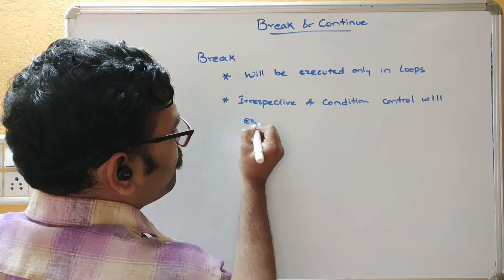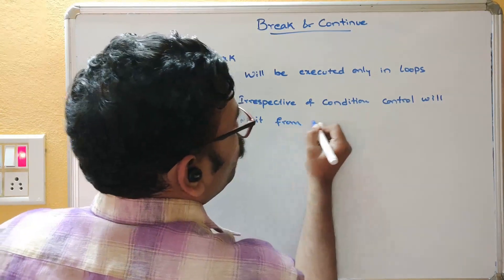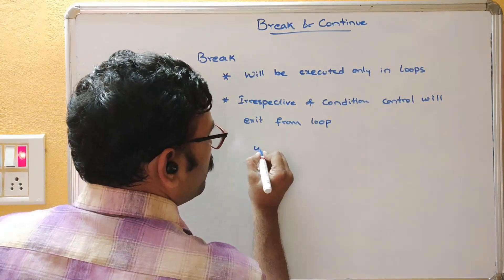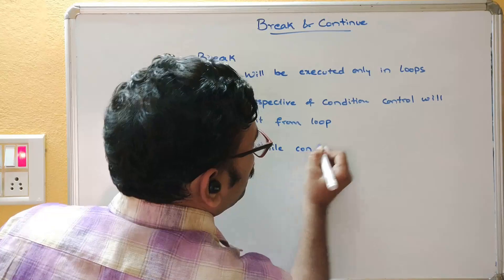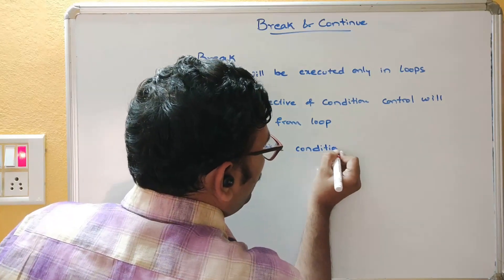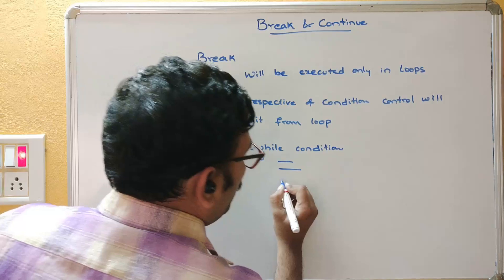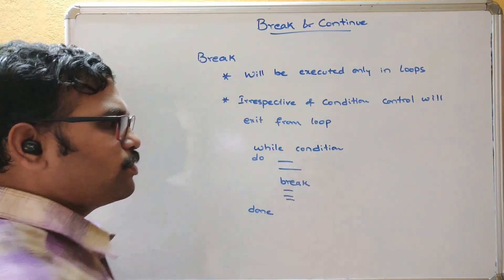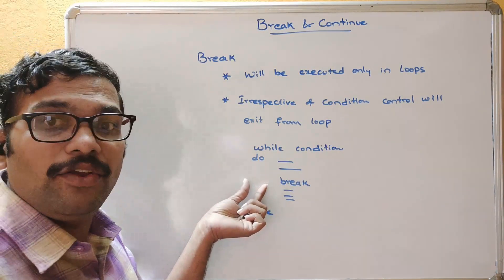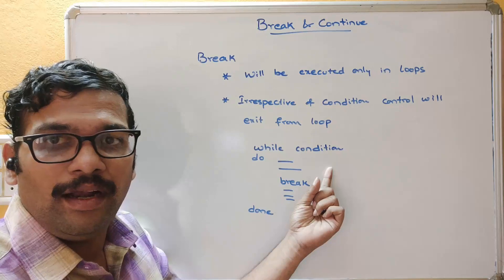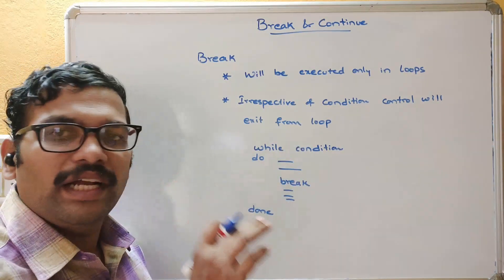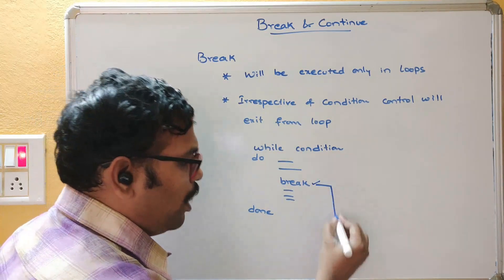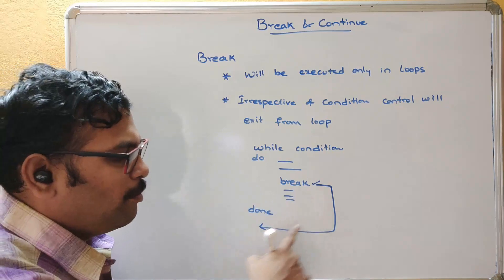The break statement will exit from the loop — either a for loop, while loop, or until loop — irrespective of the condition. For example, in a while loop with some instructions between do and done, if the break statement is reached, the control will immediately come out from the loop even though the condition is still true.